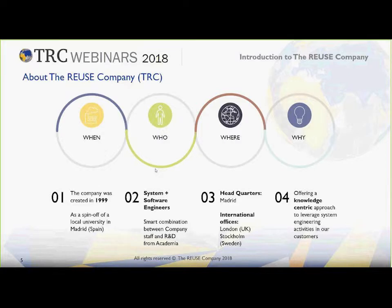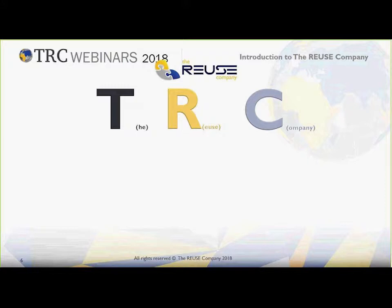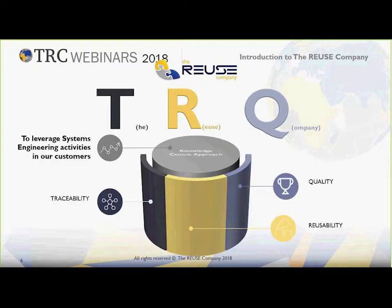We are an organization that has almost 20 years old now. All the people involved in the company are either systems or software engineers, which makes a good combination to understand the different challenges we have to face with requirements. Our headquarters are in Madrid, but we also have international offices in London and Stockholm for the Scandinavian countries. The Reuse Company, or TRC, stands for three main pillars: T for trustability, R for reusability and retrieval, and Q — instead of C in Spanish — for quality.